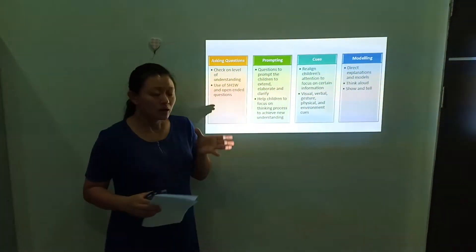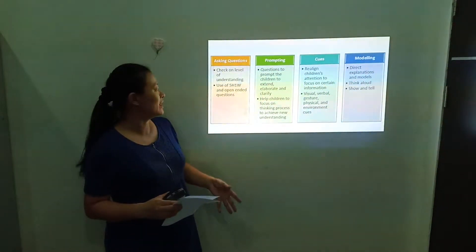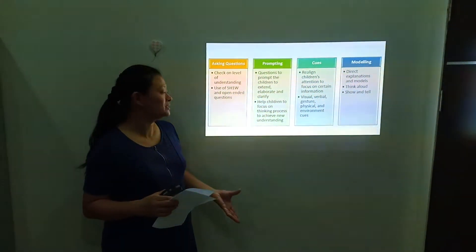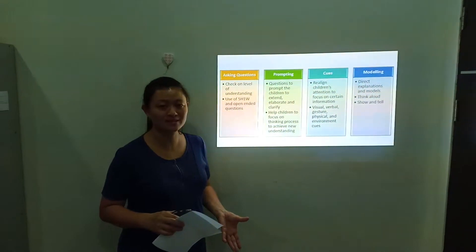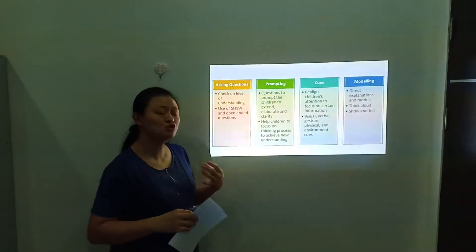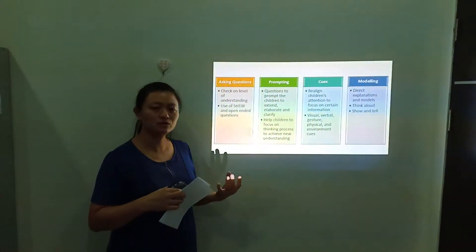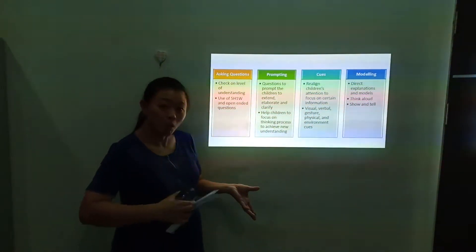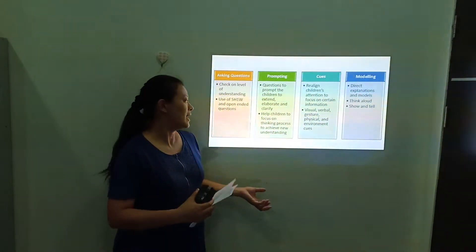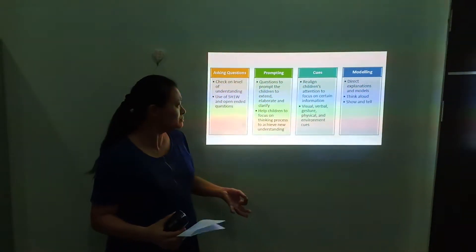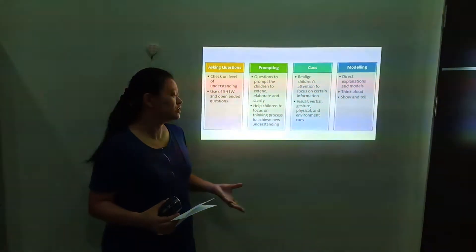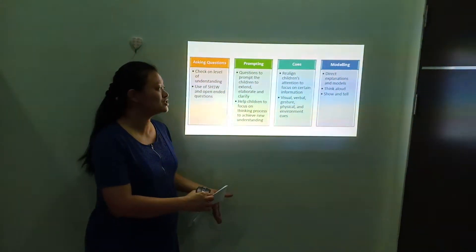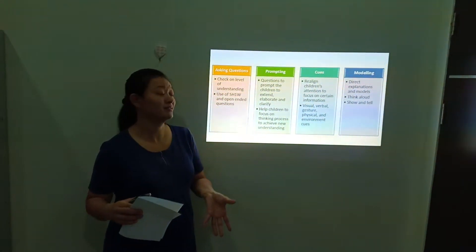We should constantly ask questions to check the level of understanding of the children. Using 5H1W questions and open-answer questions instead of closed-ended questions allows children to give feedback so we can know how they have progressed. For prompting, we use probing questions to prompt children to extend, elaborate, and clarify their ideas. This helps children focus on the thinking process to achieve new understanding. Teachers can also give cues to realign children's attention to focus on information they may have missed.